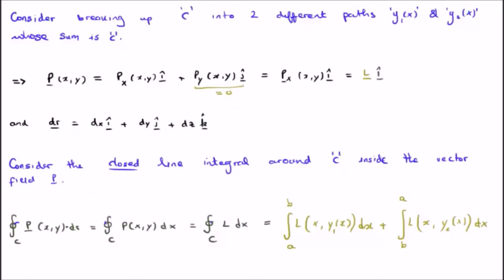Now, we're going to consider the closed line integral around the curve C, but inside the vector field P, which only has an i hat direction. Now, of course, the line is going to be dr, the infinitesimal line element is dr, so dx i hat plus dy j hat plus dz k hat.